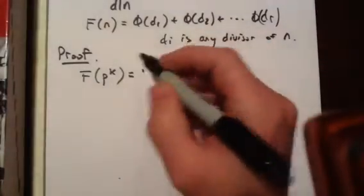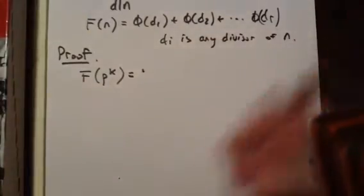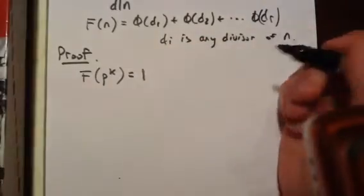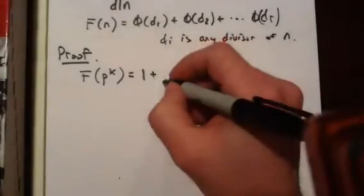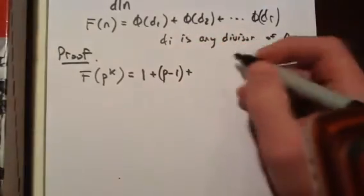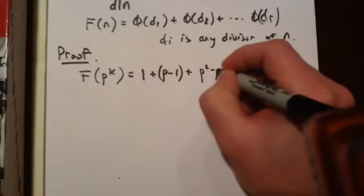So phi of each of those numbers we know is going to be 1 plus p minus 1, that's phi of p. Phi of p squared is p squared minus p.